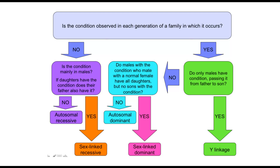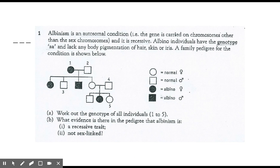A flowchart shows how we can determine what type of condition is shown in a pedigree. Follow the arrows to analyse the pedigree and determine whether it is autosomal recessive, autosomal dominant, X-linked recessive, or X-linked dominant. We don't look at Y-linkage at this stage, so most of the time you'll end up in the purple, orange, blue, or pink sections of the flowchart.